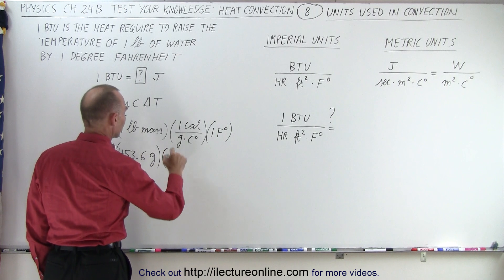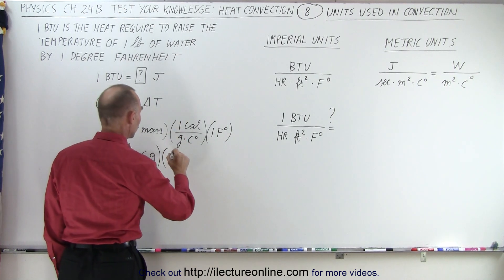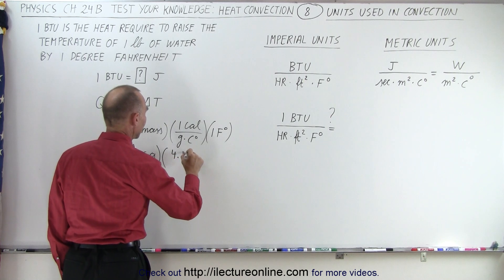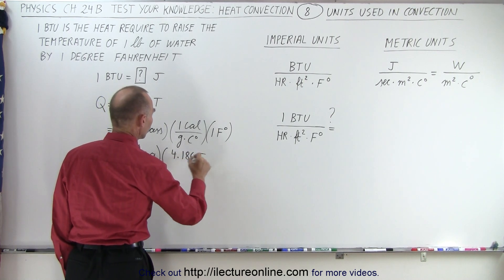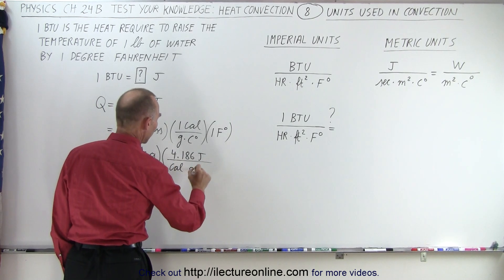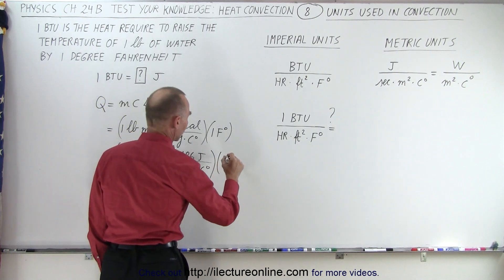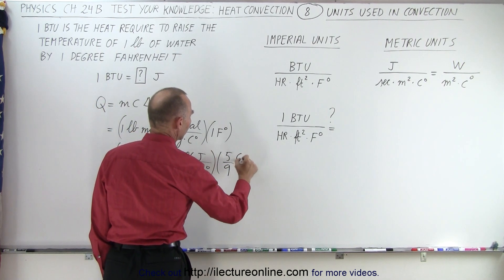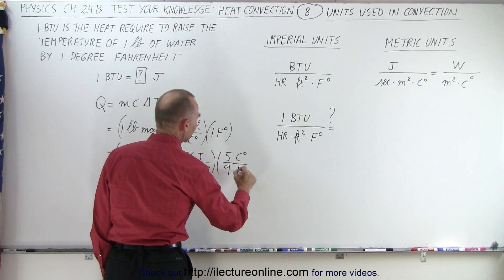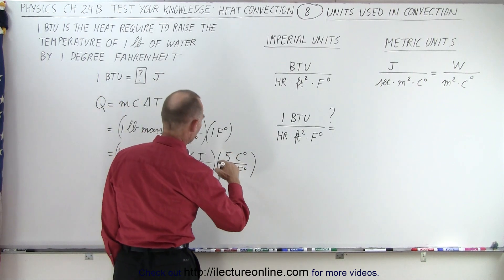And then we're going to multiply that times one calorie converted to joules, so it would be 4.186 joules per calorie. We still have grams times centigrade degrees, and then here on the Fahrenheit degrees we're going to convert that to 5 over 9 centigrade degree per Fahrenheit degree.